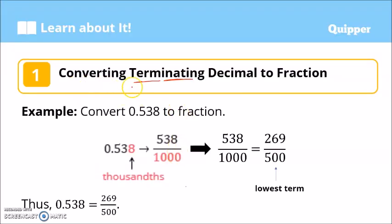First, we have converting terminating decimals to fractions. When we say terminating decimals, those are decimals that have an ending. It stops, just like 0.538. The 8 is the last digit. Convert 0.538 to fraction. Notice that 8 is in the thousandths place.